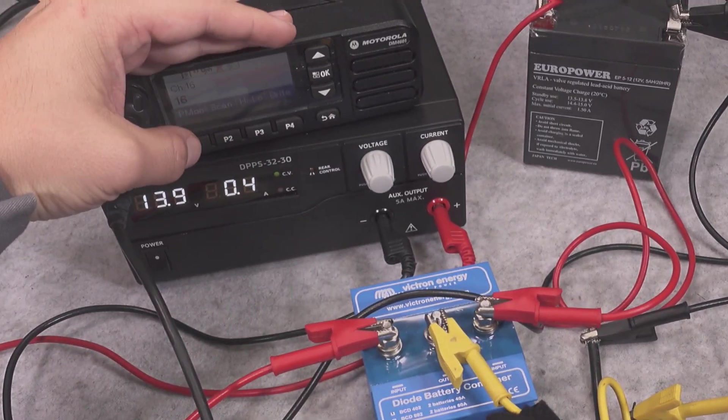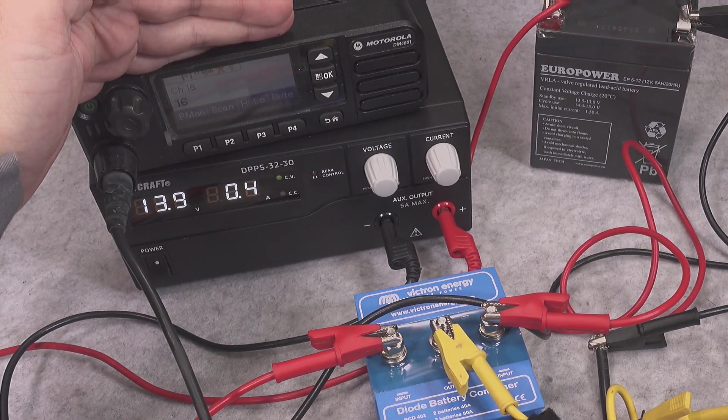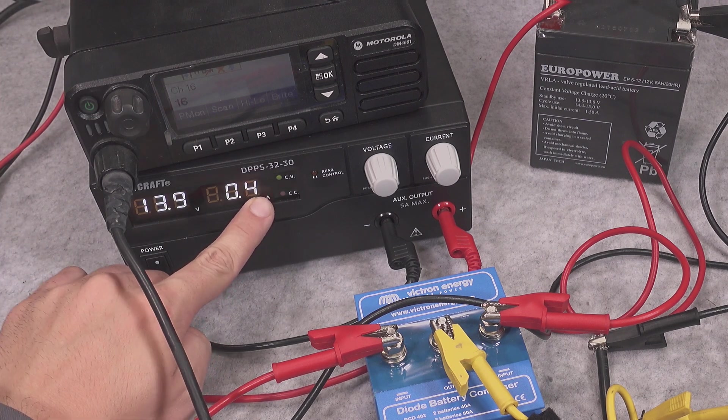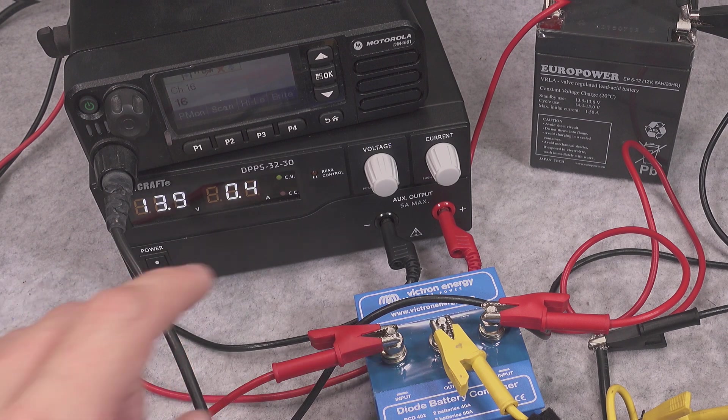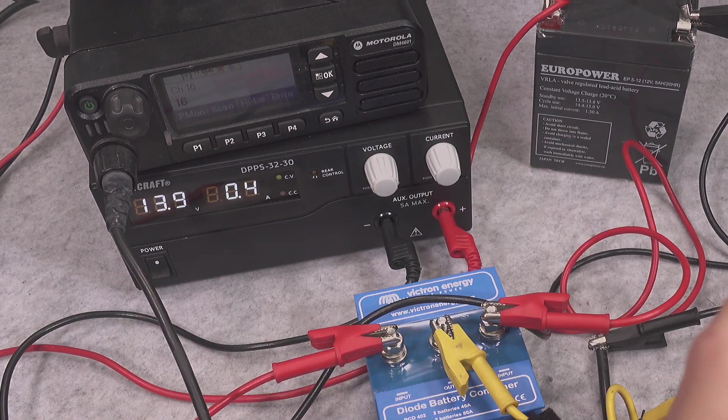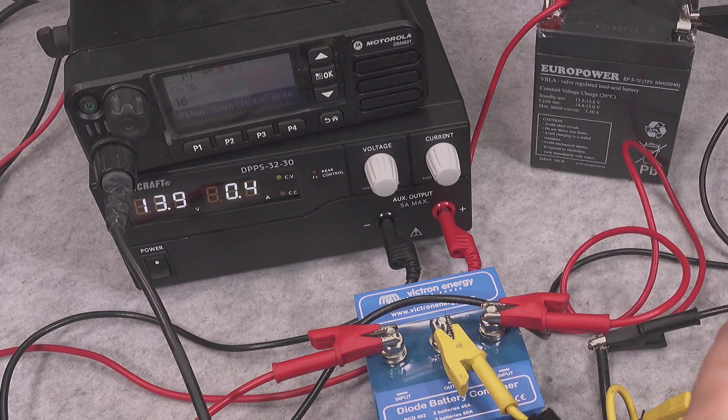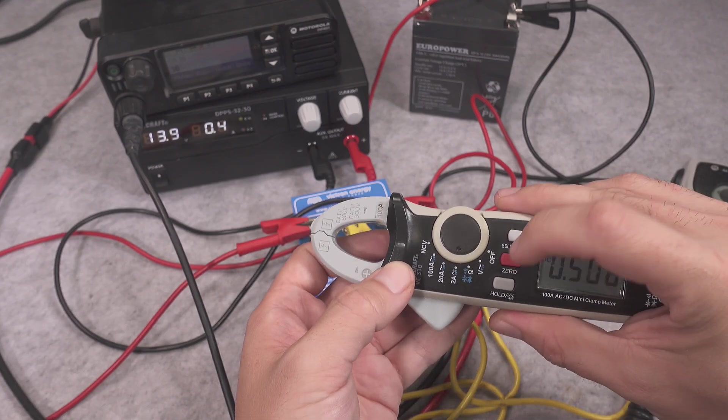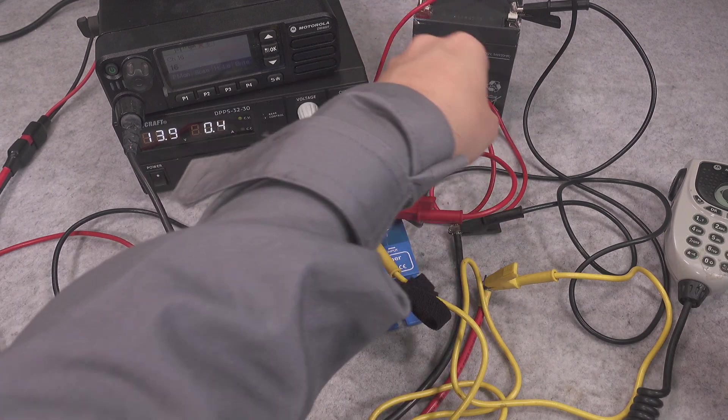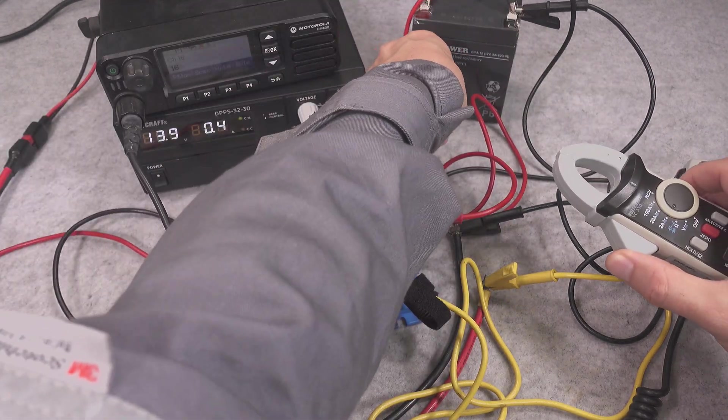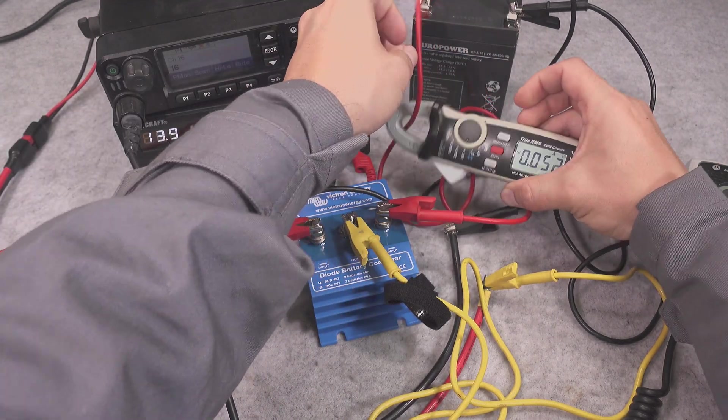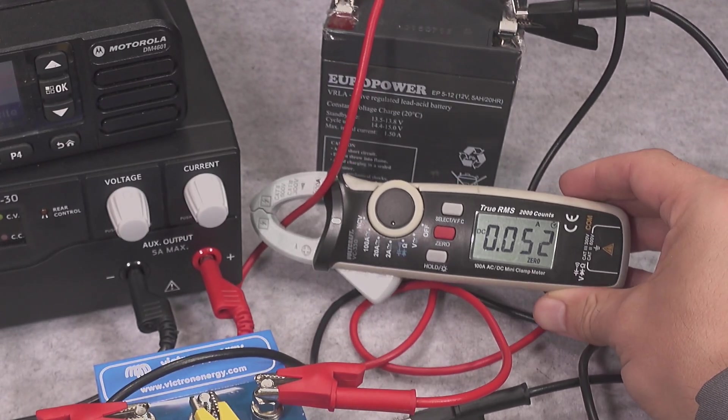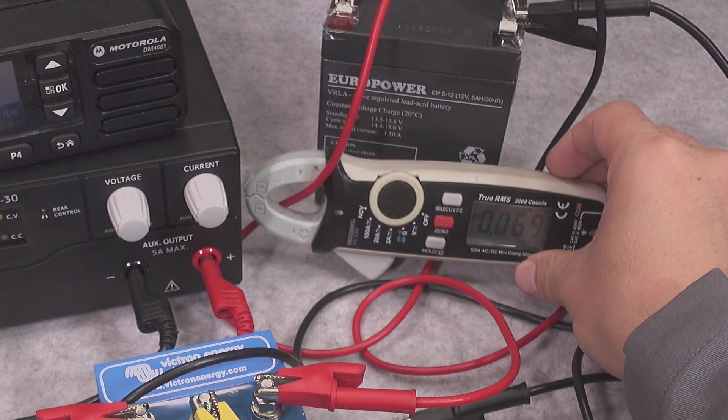As you can clearly see our radio is working beautifully and we've got current flowing from the power supply. Most likely we should not see any current flowing from the battery. And let's make sure that's the case. And I will grab the red wire. And as you can see we've got no current flowing.